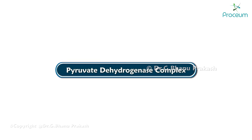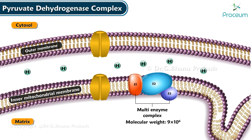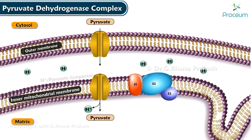The PDH complex, also known as the pyruvate dehydrogenase complex, is a multi-enzyme complex present on the inner mitochondrial membrane. The molecular weight of the PDH complex is 9 × 10⁶. Pyruvate is produced in the cytosol as the end product of aerobic glycolysis. It enters mitochondria by a pyruvate-proton symport present in the inner mitochondrial membrane.